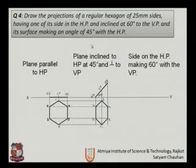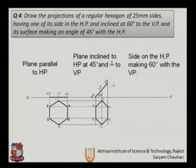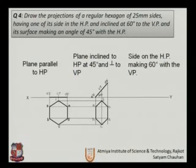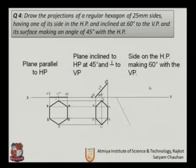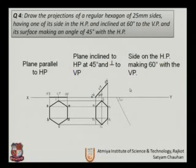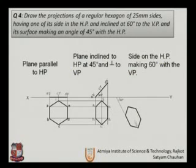The problem continues, as we also need to obtain a third step — the angle of 60 degrees with the HP. Forgetting the initial position, we use the dimensions from the second step to obtain the inclined plane. Since it makes an angle with the horizontal plane, we draw a 60-degree line to the XY reference line, using the same dimensions to generate the 60-degree hexagon figure.